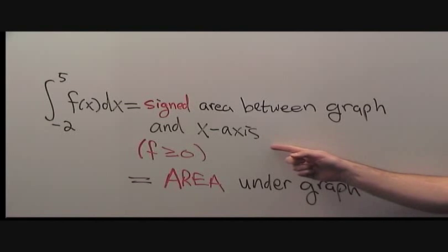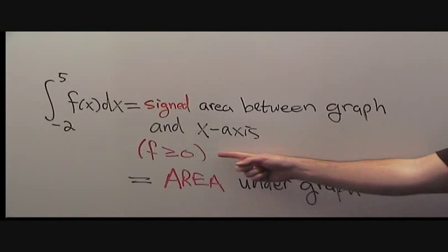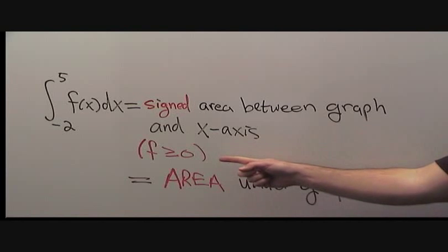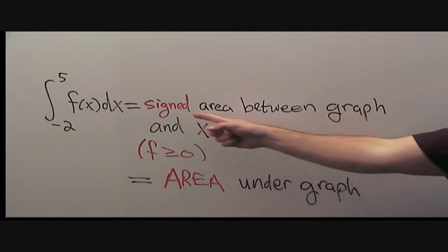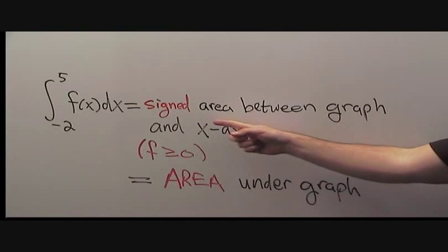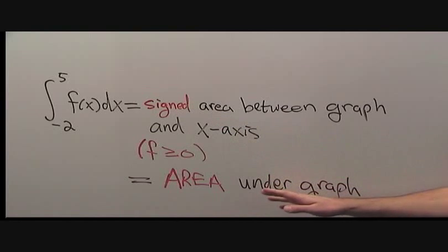We can use additional information from the picture, namely, the function f is always greater than or equal to zero. Therefore, the signed area will always be positive, so we are simply looking for the area under the graph.